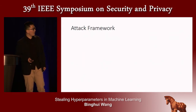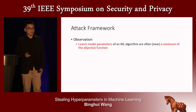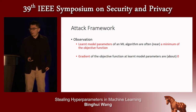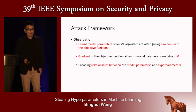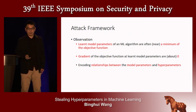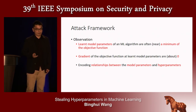Now the attack framework. The key observation is that the learned model parameters of a machine learning algorithm are often at or near a minimum of the objective function. Therefore, the gradient of the objective function at the learned model parameters should be zero or near zero. We leverage this observation to encode the relationships between model parameters and hyperparameters, and use it to steal the hyperparameters.